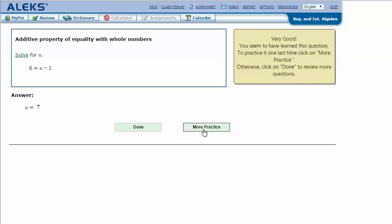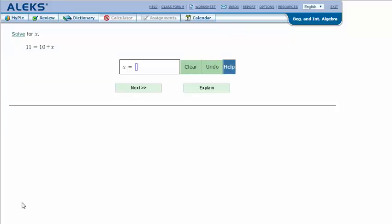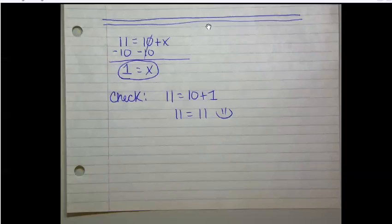Let's try one more. Solve for x: 11 equals 10 plus x. Here are my notes. 11 equals 10 plus x. And so I could either kind of look at this and try to recall my addition facts and think, oh well, 10 plus 1 would equal 11. But if I'm struggling to come up with that, then I can go through the process here.